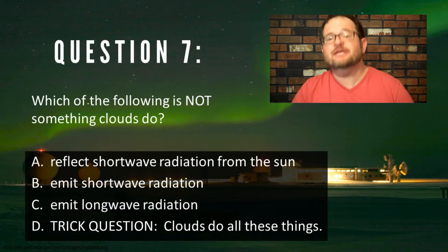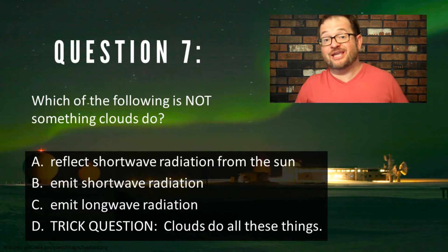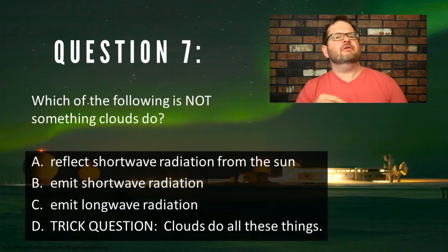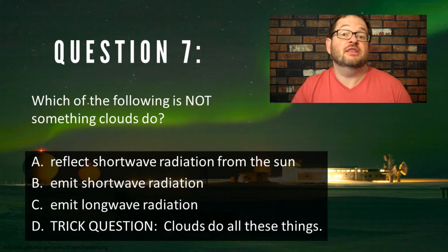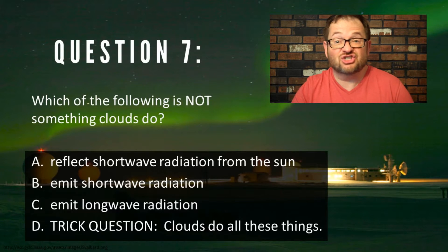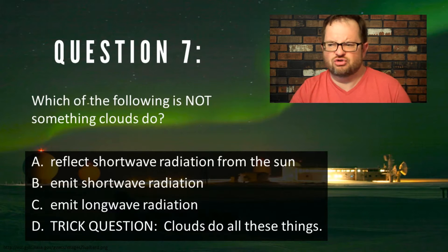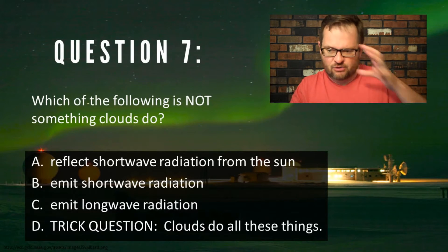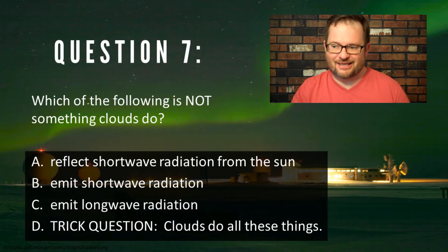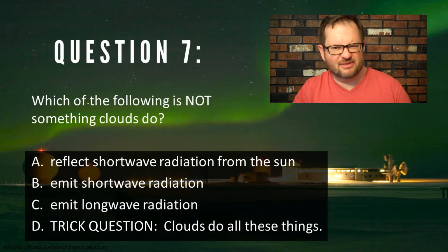What clouds don't do is emit shortwave radiation. Remember from Wien's Law that the wavelength of radiation depends on the temperature of the object doing the emitting, and shortwave radiation is associated with objects with temperatures like the surface of the sun — we're talking like 10,000 degrees Fahrenheit or something like that. Clouds are nowhere near that warm.